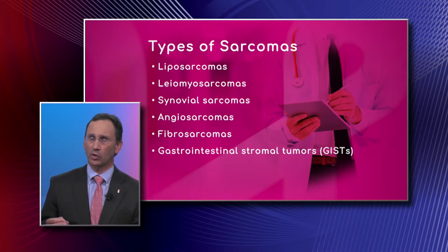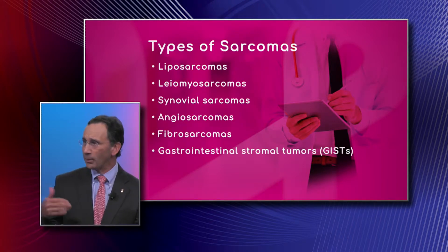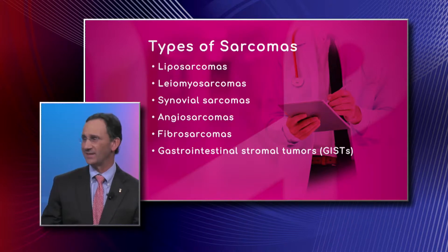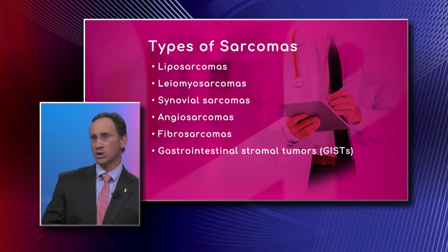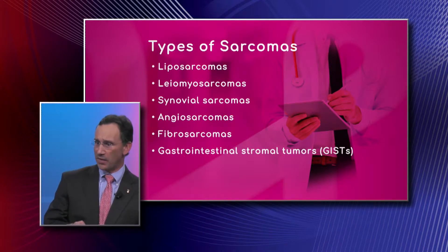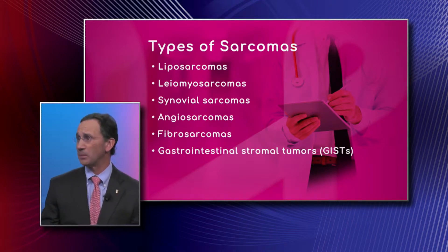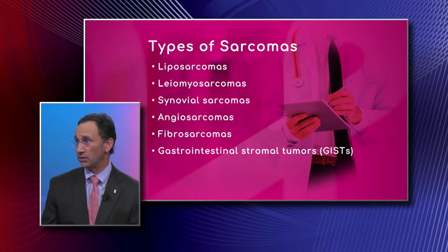Fibrosarcomas are sarcomas that occur from the fibroblasts — that's the one in the video. Those are the cells that make collagen, your connective tissue itself.